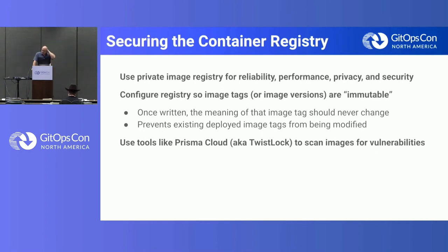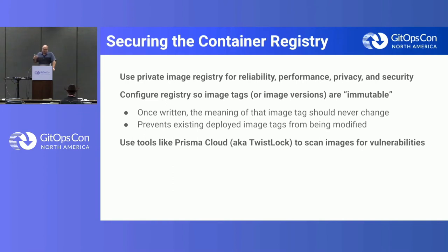Next is the container registry. Most enterprises will use a private image registry to store their container images, not only for security but also for reliability, performance, and privacy. If you're writing proprietary code, you don't want to be pushing that to Docker Hub or something like that. At Intuit, we have our own private image registry. Once you manage your own private image registry, you have more configuration and control. One thing you want is to make image tags immutable — you don't want to change the meaning of an image tag once it's set. If you've deployed an image to production, you don't want that image tag to be changed out from underneath that running system. You also want to use tools like Twistlock or Prisma Cloud to scan those images for vulnerabilities.